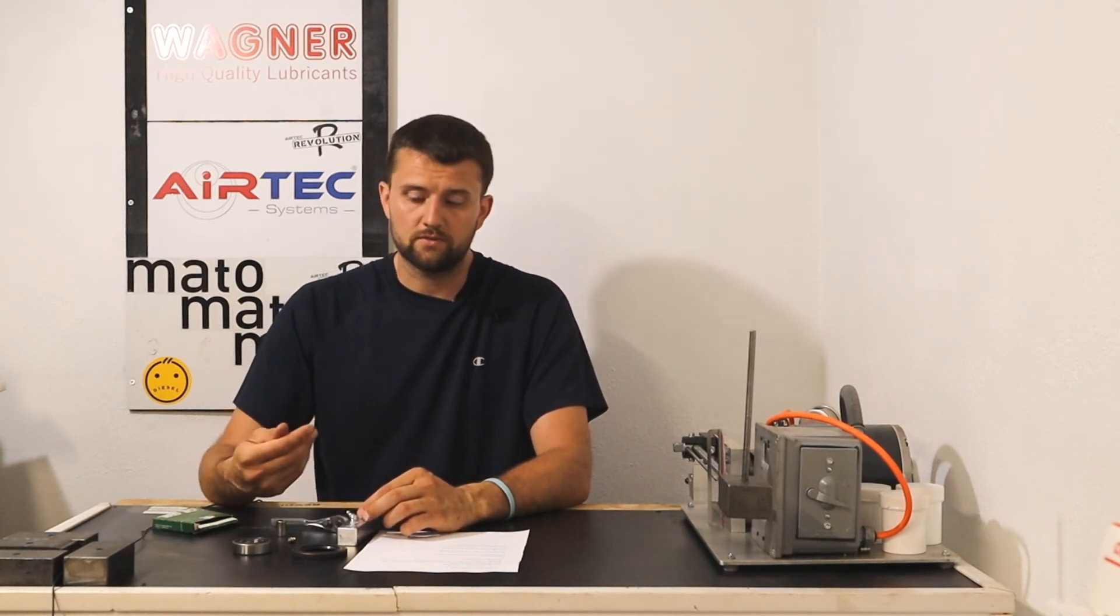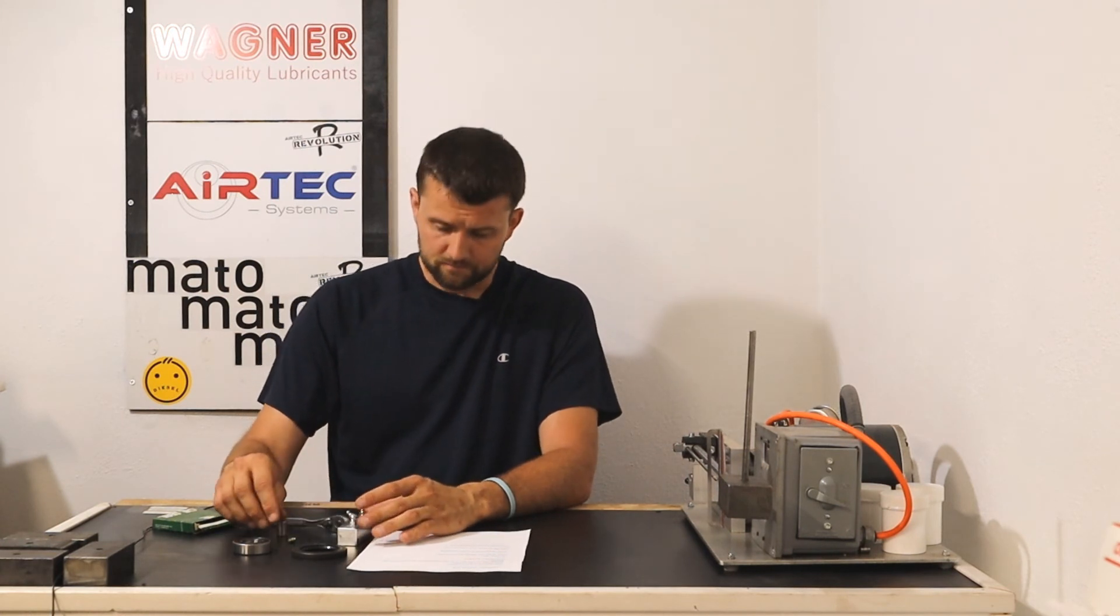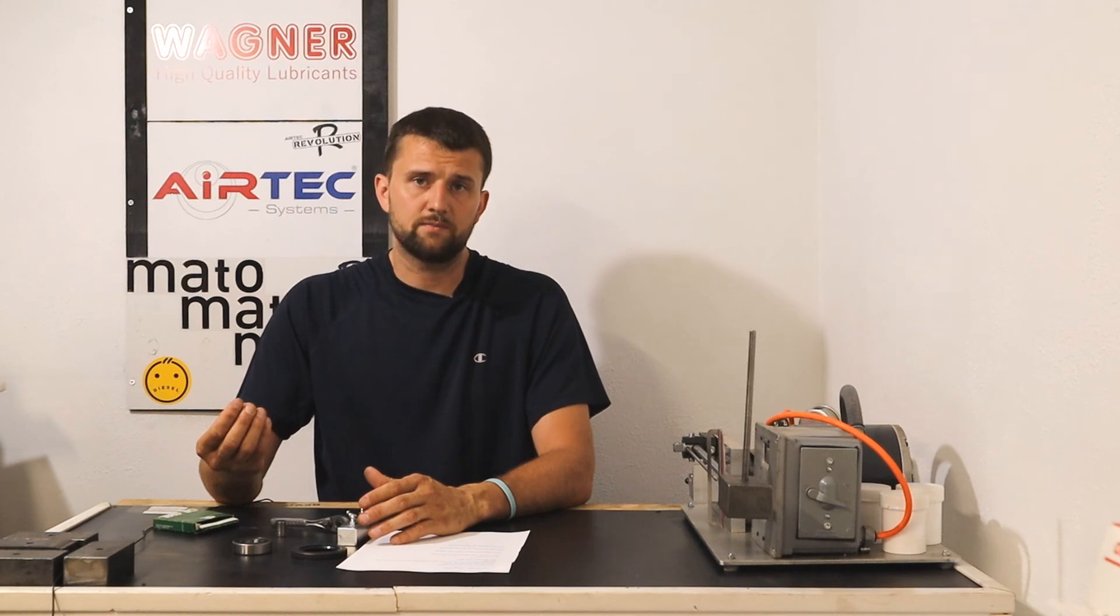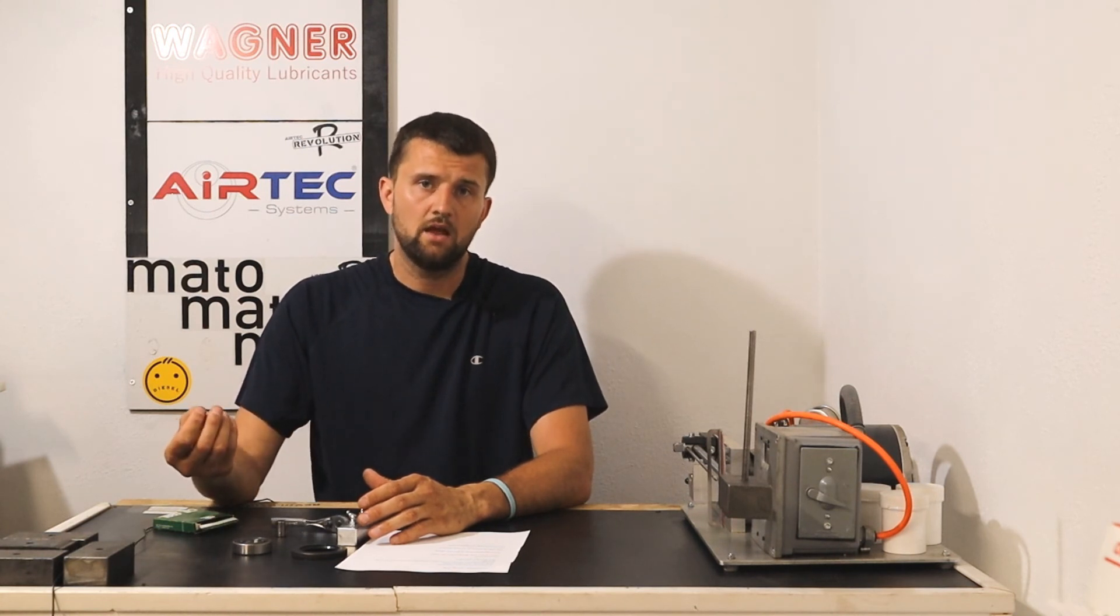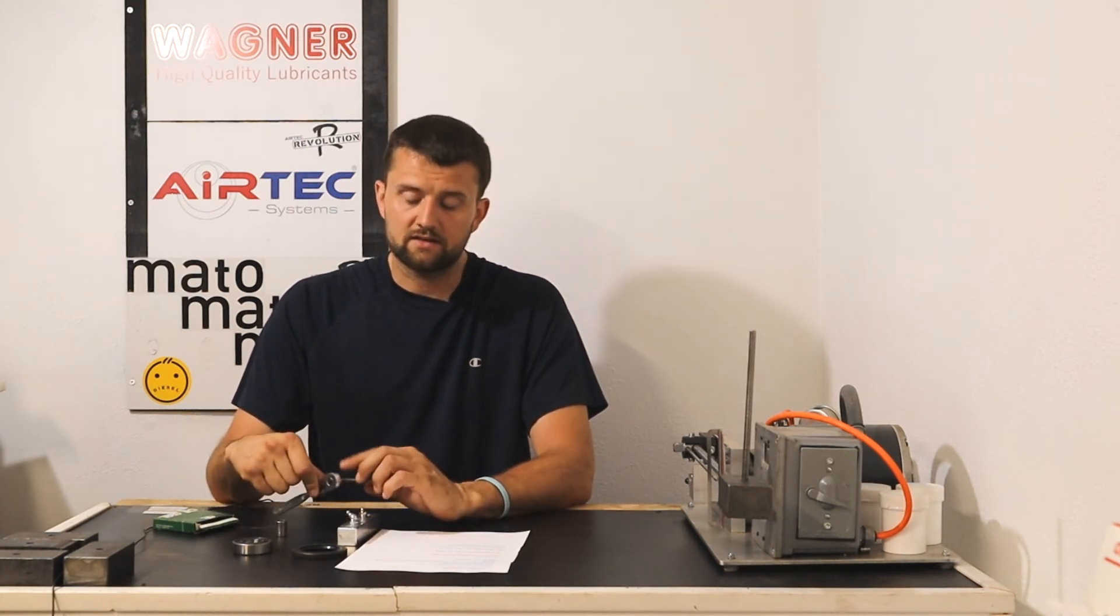Don't over tighten it, you don't want to strip that out. And if it's a standard size zerk fitting, so a US zerk fitting, typically they're going to be 9 32nds for a socket size.